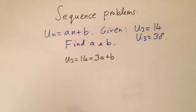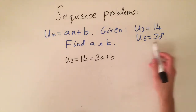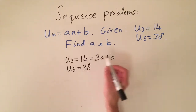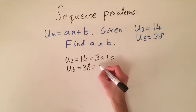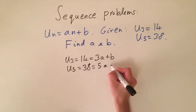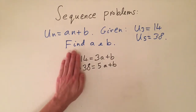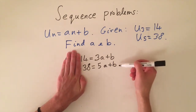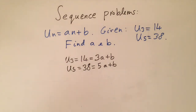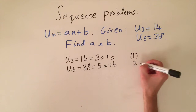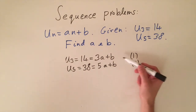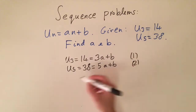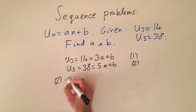Ignoring the sequence notation, we now have a system of two linear equations with two unknowns: 3a + b = 14 (equation 1) and 5a + b = 38 (equation 2). We can solve this using various methods. Since both equations contain a b term, subtracting one from the other will eliminate b.